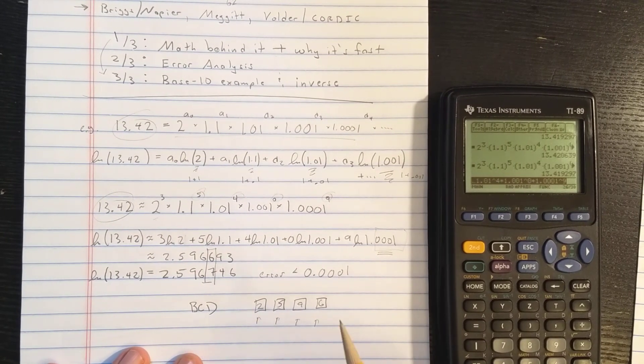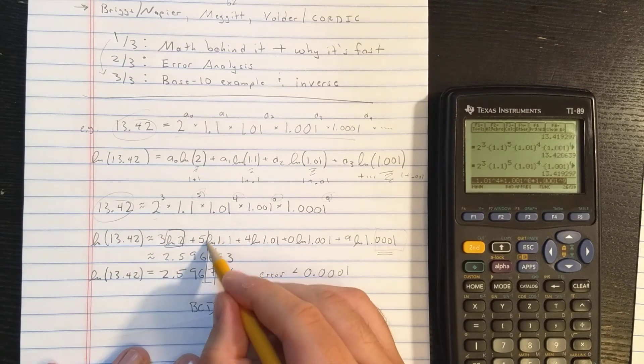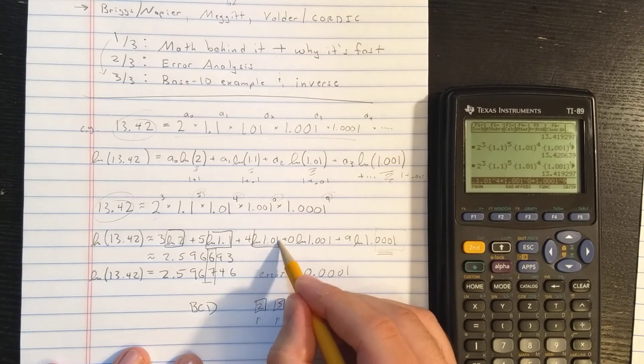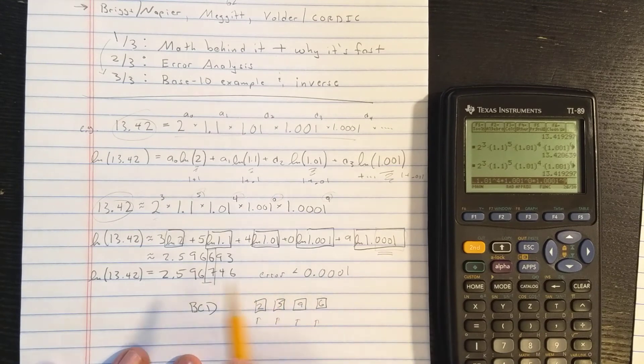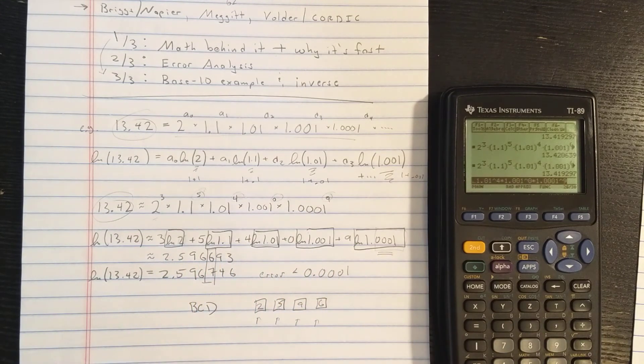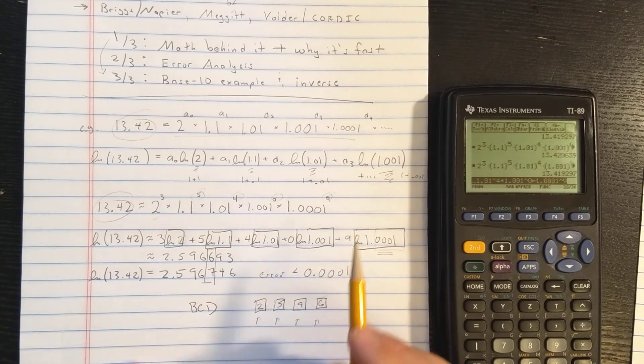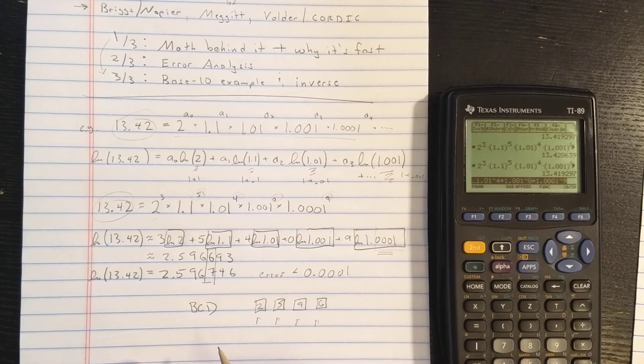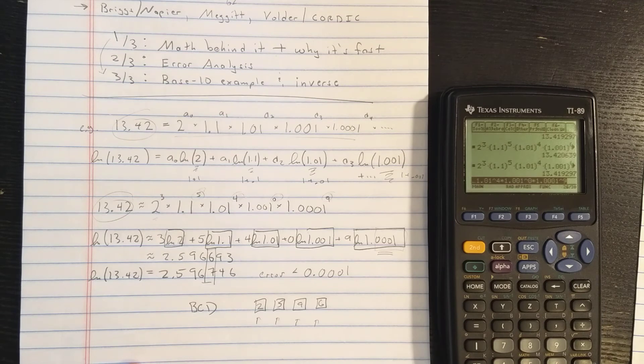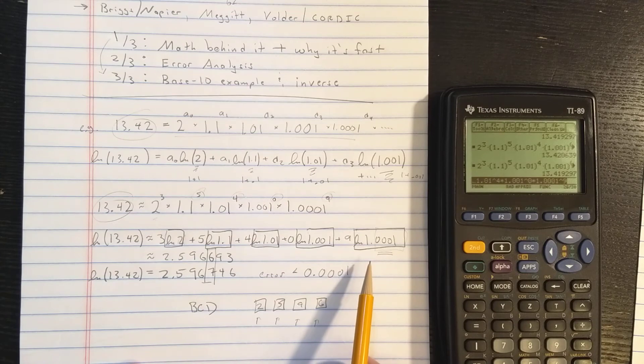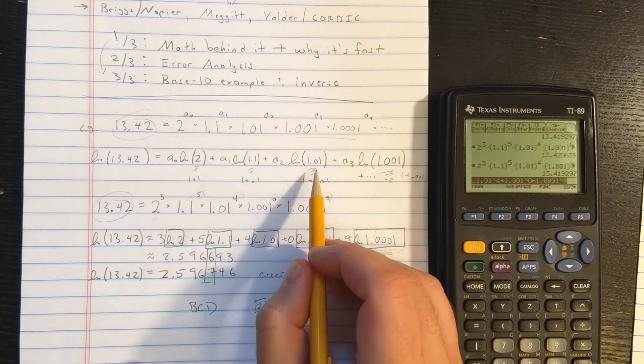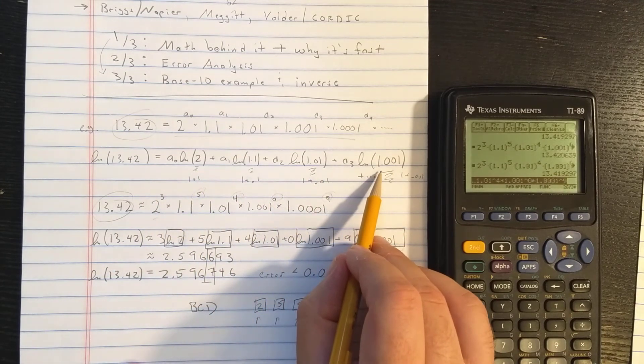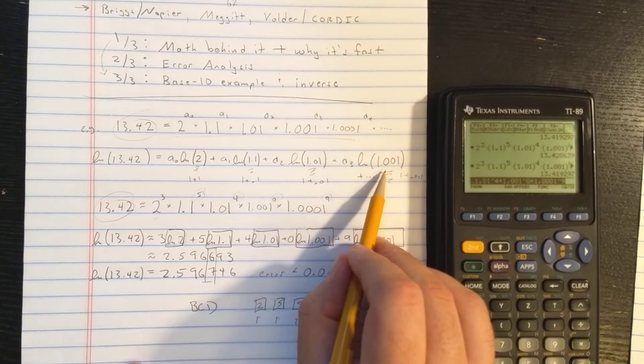So why is this fast? Well, the first thing is that each of these numbers is stored in the memory of the calculator as a constant, down to the level that the calculator needs to go for the precision it requires. This is going to depend on how many digits your calculator wants to display. Maybe it's an eight digit display, maybe 10. Okay. So you have those constants in the calculator's ROM. But the real secret is the choice of these numbers, the 2, the 1.1, the 1.01, and the 1.001. Why those numbers?